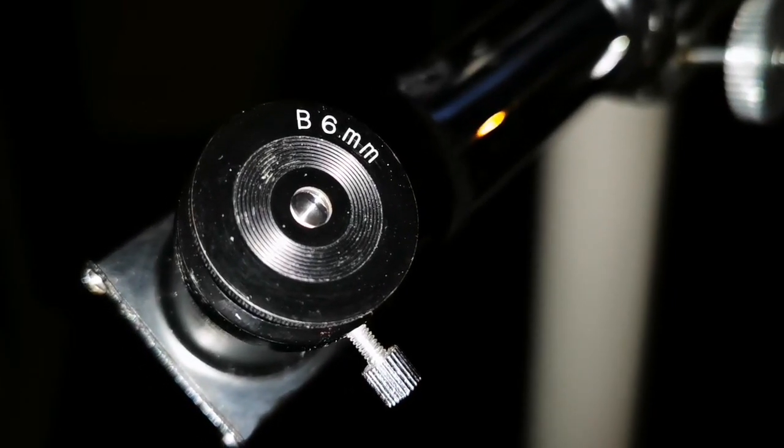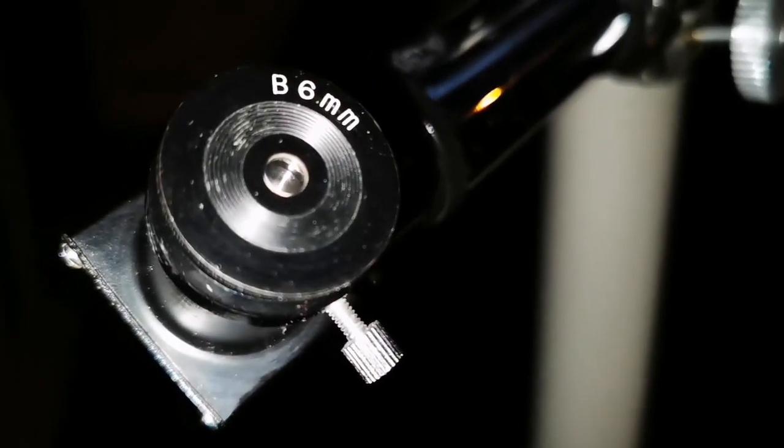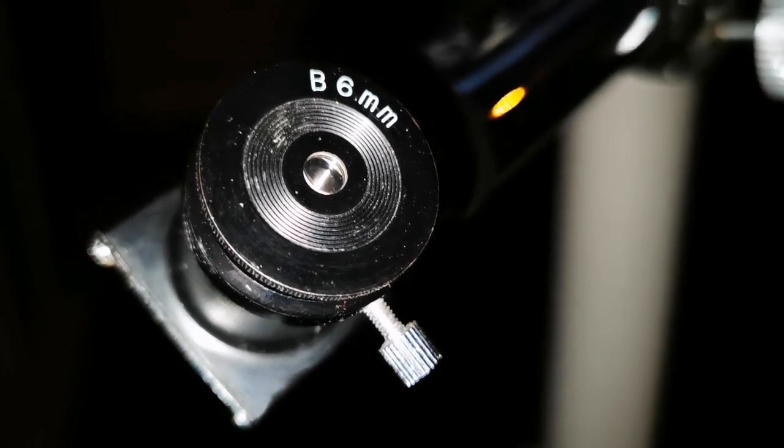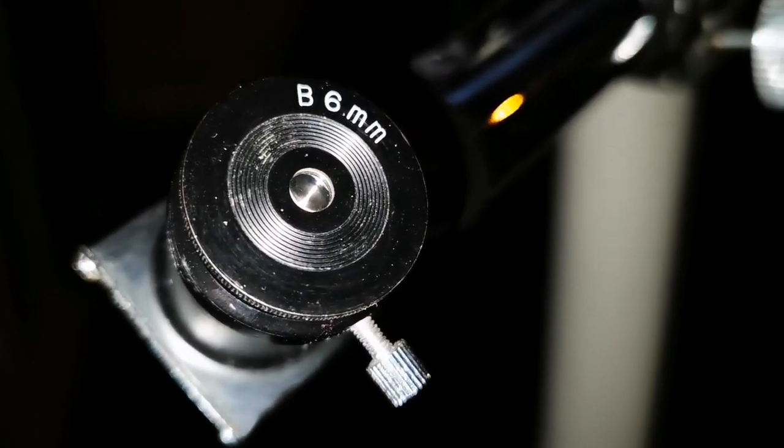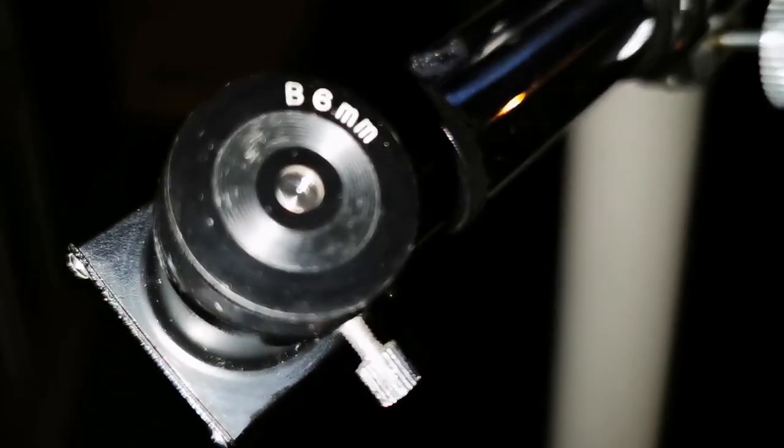Now I am using the Bartel 6mm, which is equal almost to an orthoscopic in a way, but it is a Japanese style 0.96 inch. The image deteriorates, you don't see any more detail. Two bands, that's it.